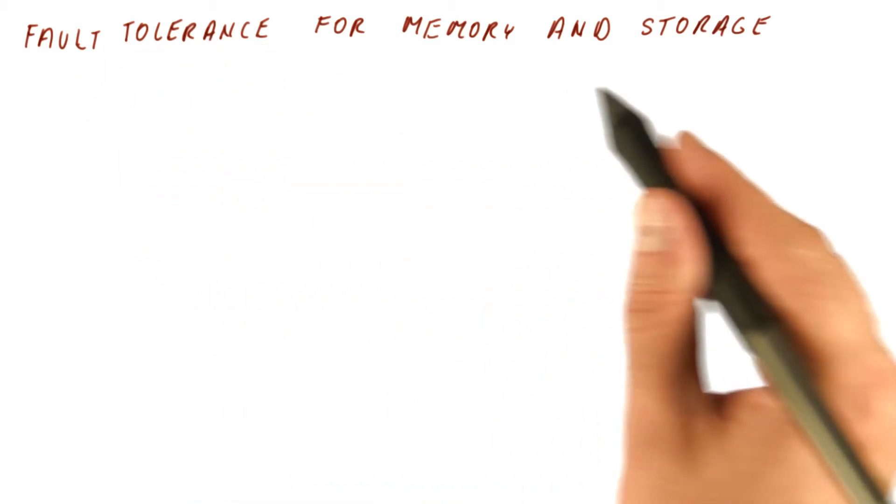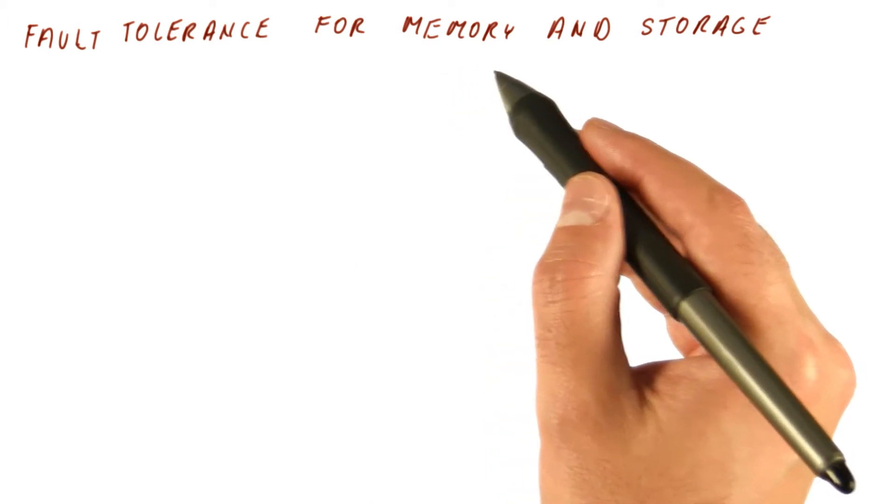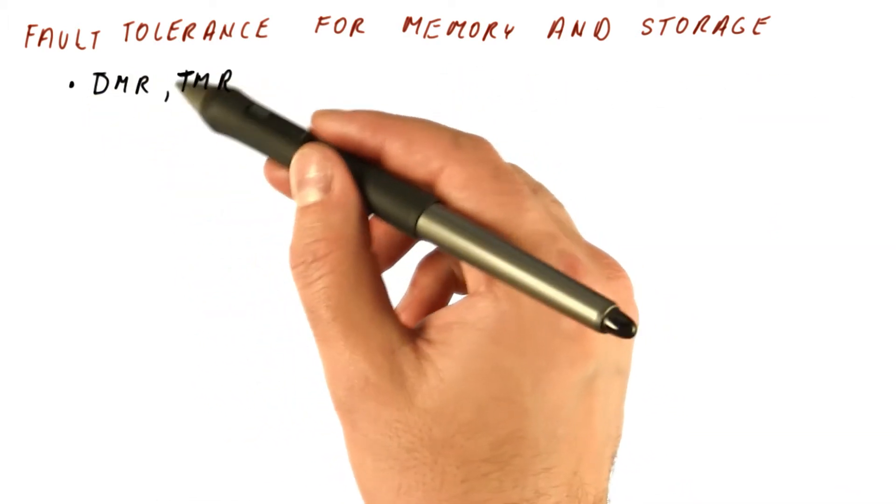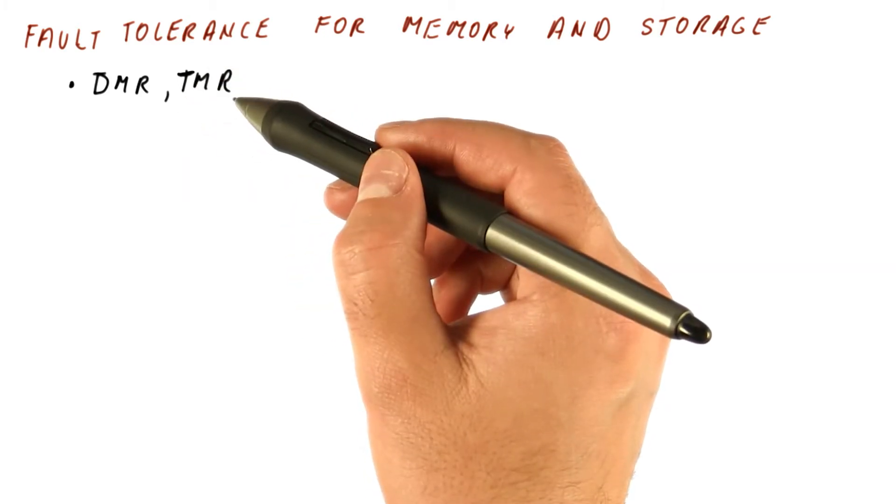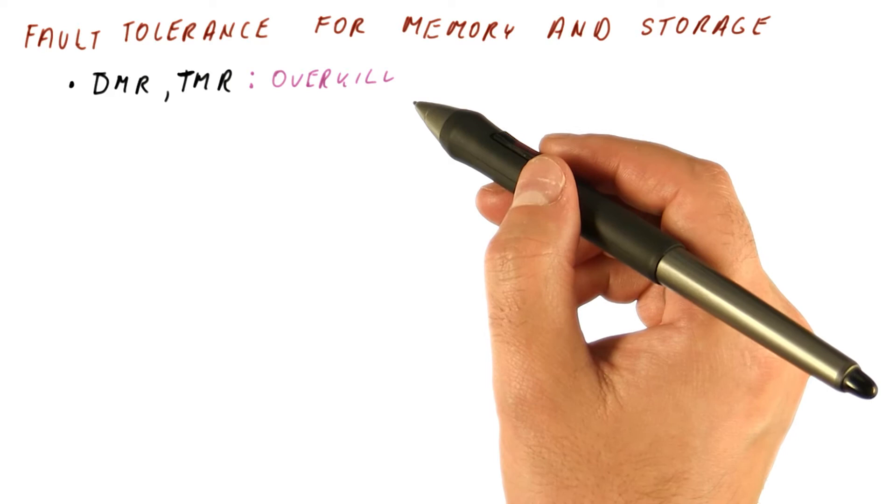We have seen some relatively general fault tolerance techniques. Now let's look at fault tolerance techniques for memory and storage. We could use dual modular redundancy or triple modular redundancy for memory and storage, but they are considered overkill for these devices.